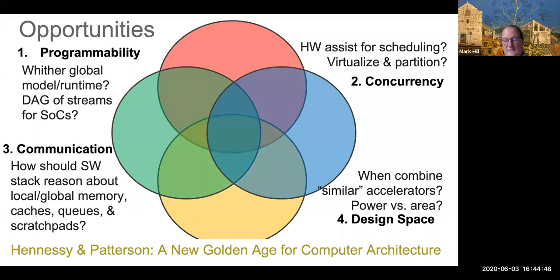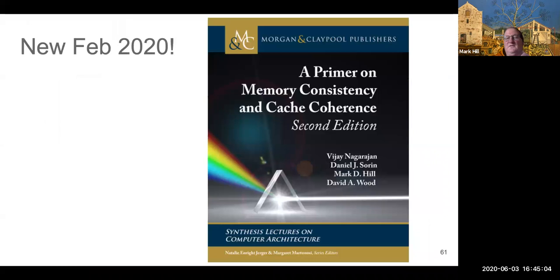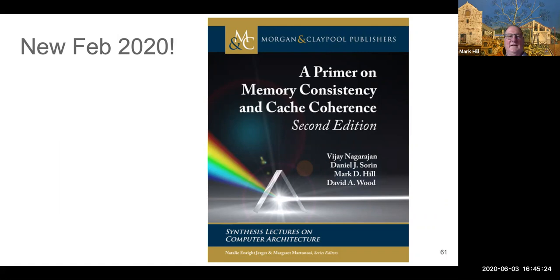So Hennessy and Patterson said a couple years ago in their Turing Award lecture that it's a new golden age for computer architecture. I would argue that this is a new golden age for computer science. And so with that, I'll show you one slide of advertisement and then I'll take questions. So the advertisement is if you're interested in memory consistency and cache coherence, I encourage you to look at our new synthesis lecture, which I hope is free to students and faculty at the Technion. The big change is there's a chapter on GPU coherence and a chapter pointing to some of the great formal methods works that happened since the first edition in 2011. So end of it, shameless plug.